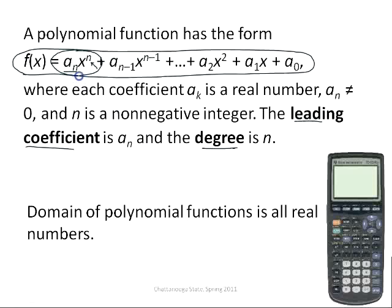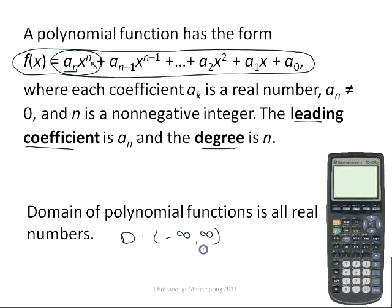Because polynomial functions are just a bunch of terms where we have x raised to a power, we don't have anything that we have to be careful about, so the domain is always going to be all real numbers — negative infinity to positive infinity.